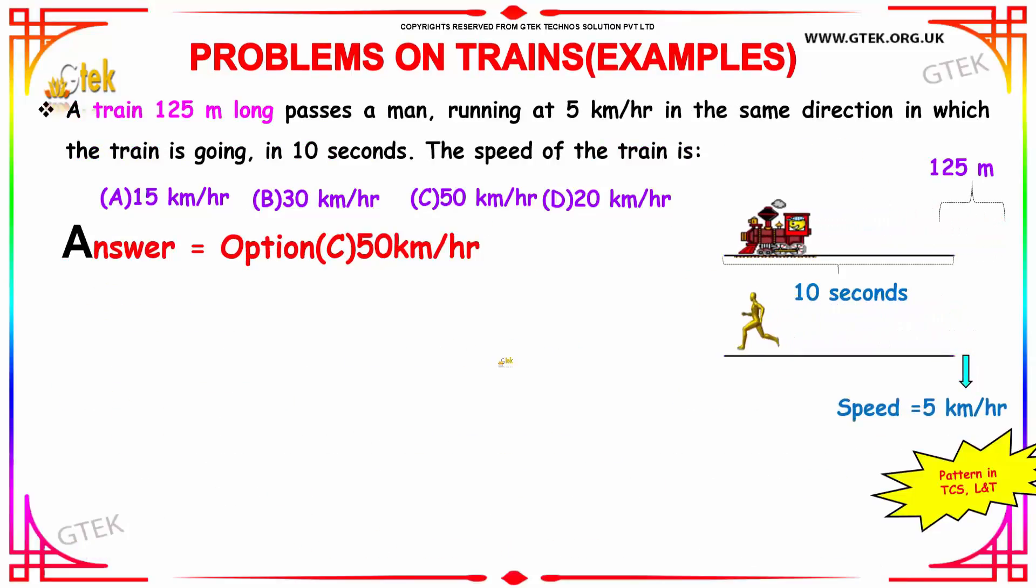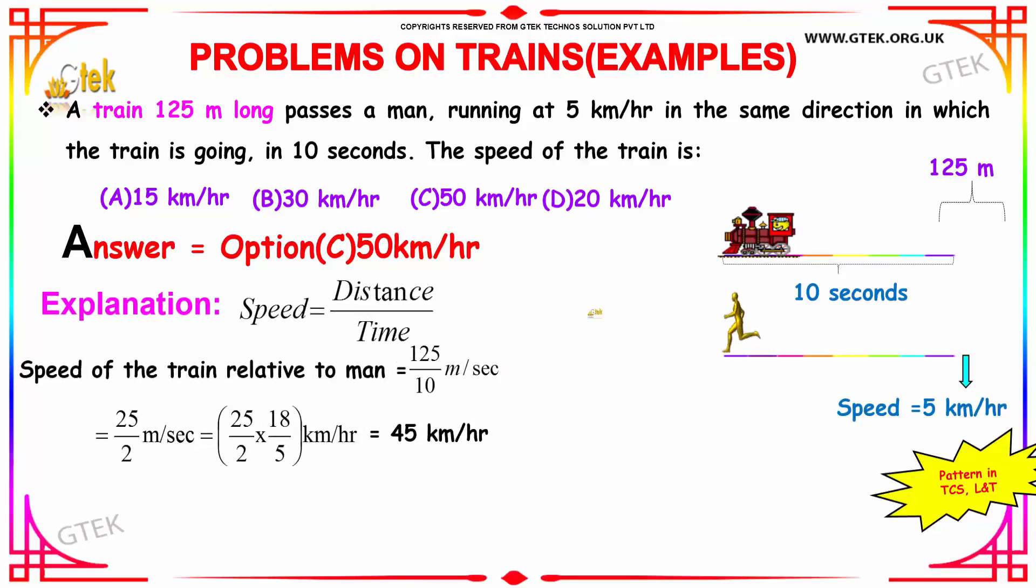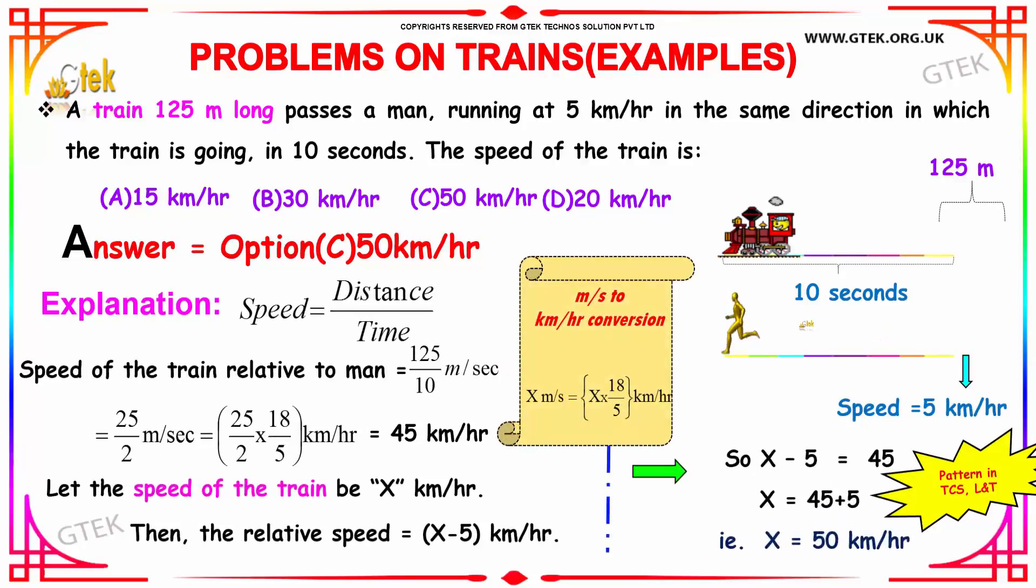A train 125 meter long passes a man running at 5 km per hour in the same direction in which the train is going in 10 seconds, and we calculate the speed of the train. We need to identify the relative speed when compared to the man. 125 is the length of the train, and the time is 10. Speed is equal to distance by time, 125 by 10, 125 by 2 meter per second.